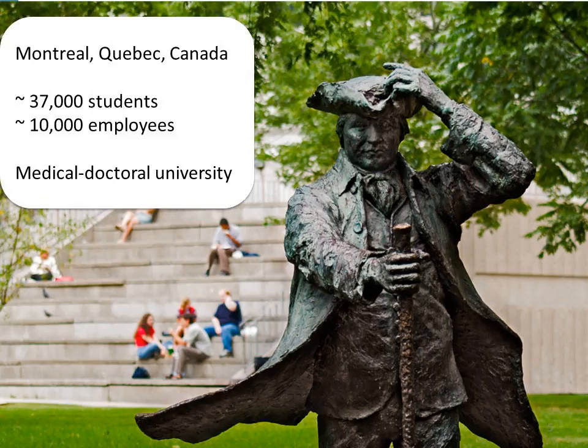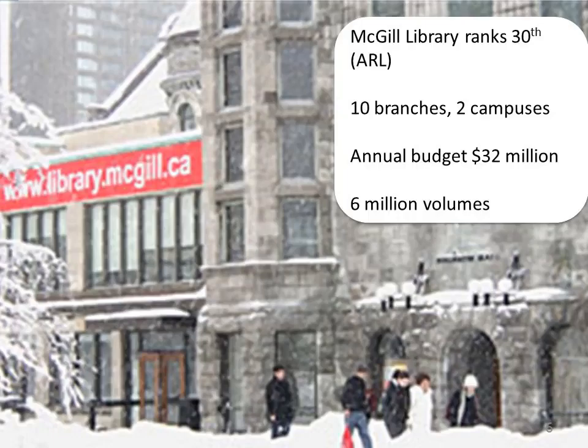For about 10 years running now, McGill University has been ranked first in Canada among the medical doctoral universities. Last year McGill ranked 30th in ARL. It's composed right now of 10 branch libraries, most of those in the downtown campus. The annual budget of the library is equivalent to 32 million American dollars, and our collection, print and electronic, is just over 6 million volumes.